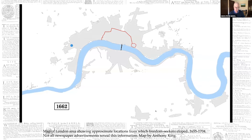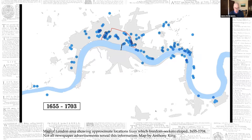Many advertisements like the one for Kwashi indicate where the freedom seeker had escaped from, and this map shows those locations over time. A significant proportion of freedom seekers escaped from the riverside communities of the East End, and to a lesser extent the South Bank, as well as the City itself.